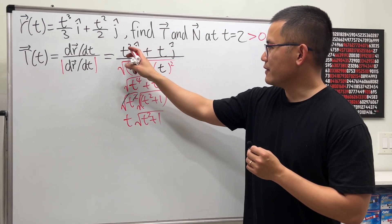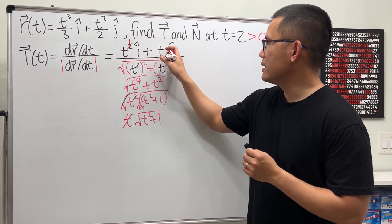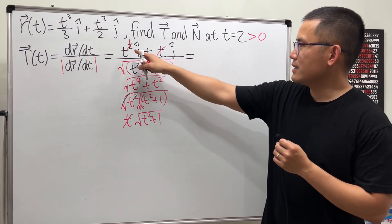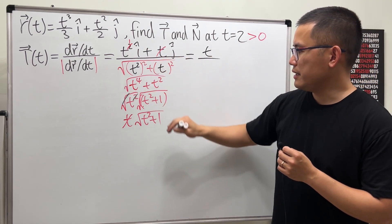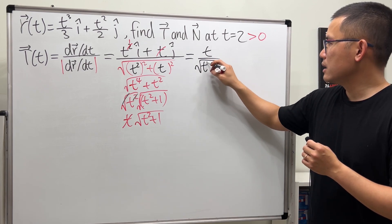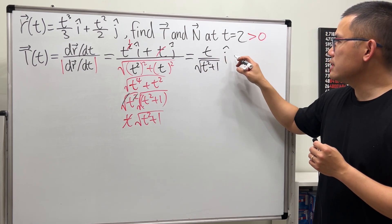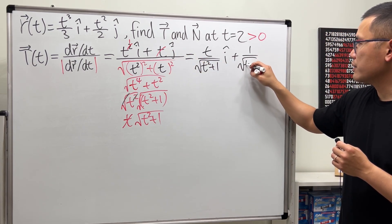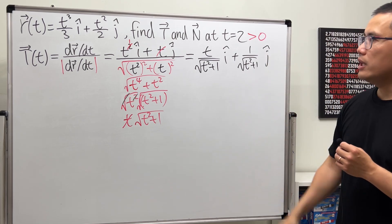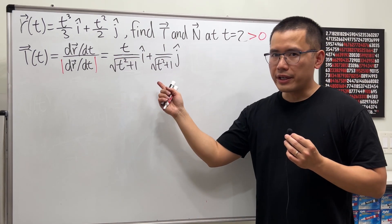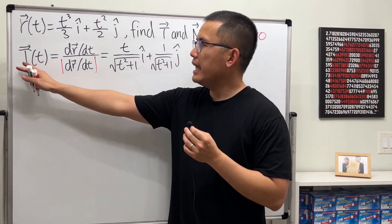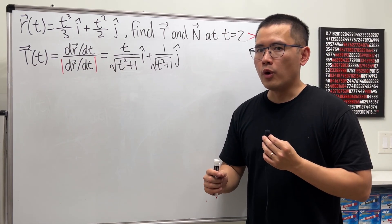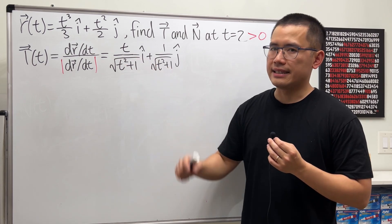We can cancel one t from the numerator with the t in the denominator. After all the reductions, the i component becomes t over the denominator — which is just square root of t squared plus 1 — and the j component becomes 1 over square root of t squared plus 1. This is the general form, which gives the unit tangent vector at any time t.